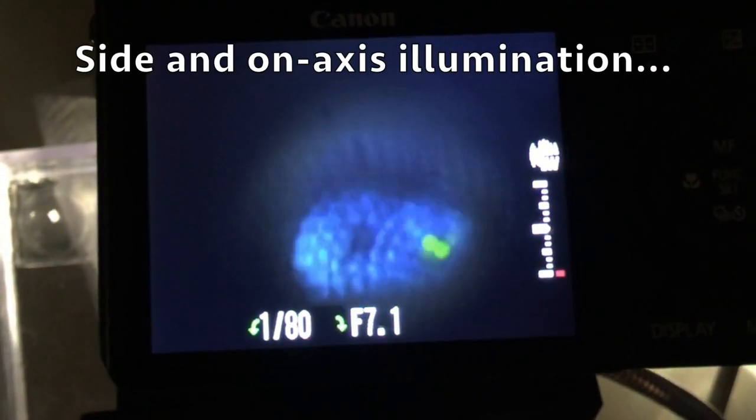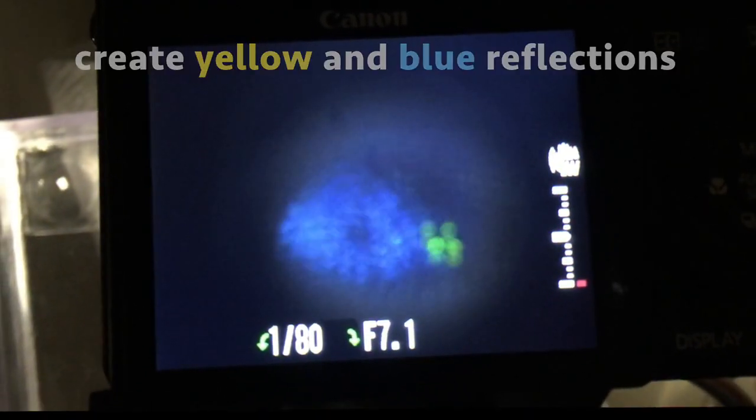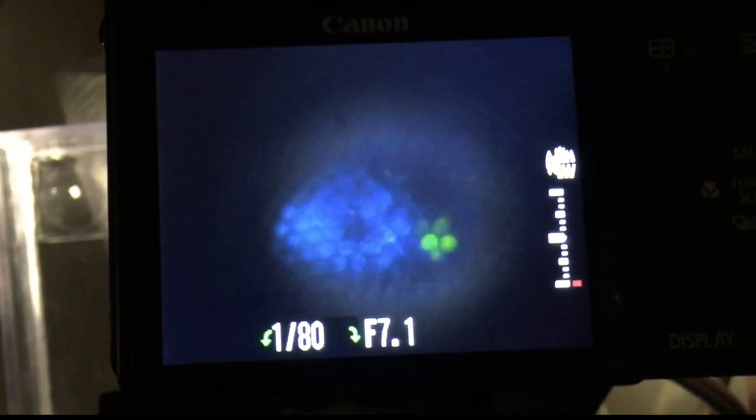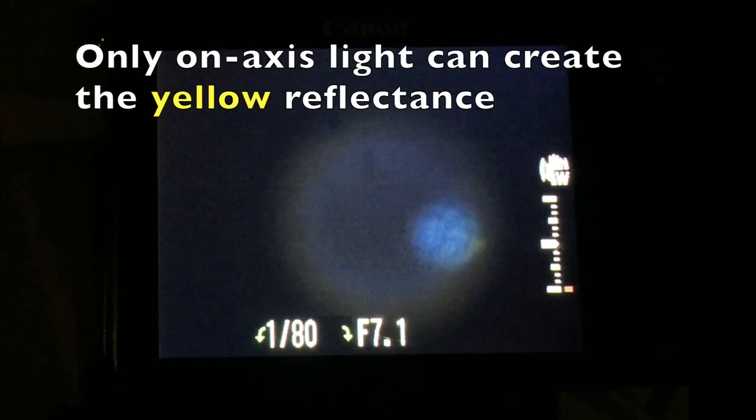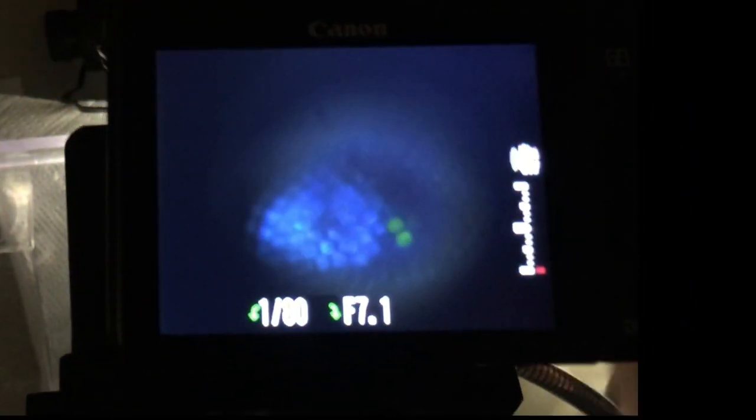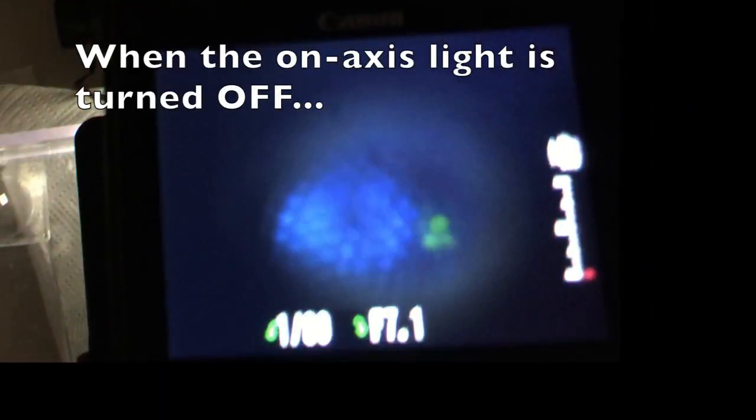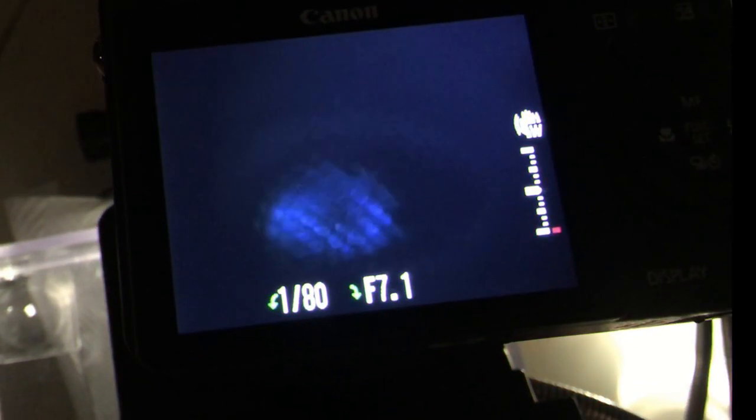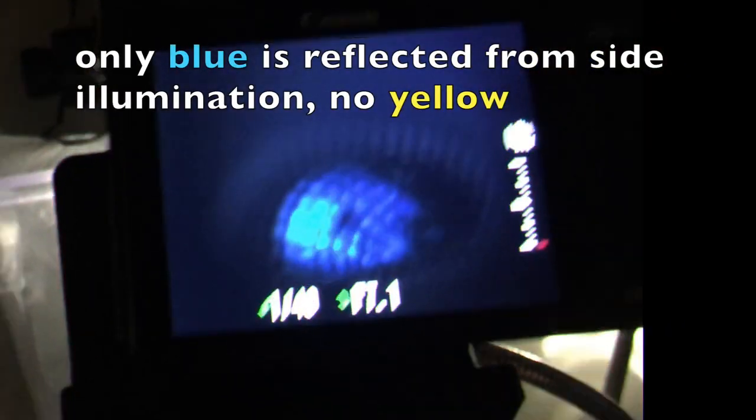We measured ISR reflectance in live animals through a microscope. Side and on-axis illumination create yellow and blue reflectances in the eyes of live mantis shrimp larvae. Only on-axis light can create the yellow reflectance. When the on-axis light is turned off, only blue light is reflected from the side illumination, no yellow.